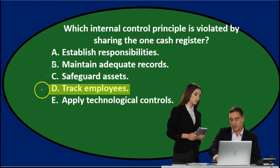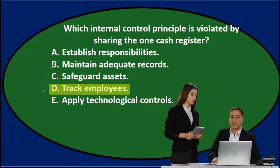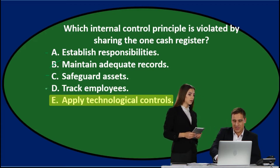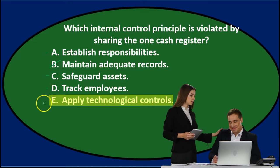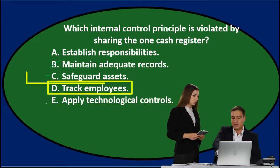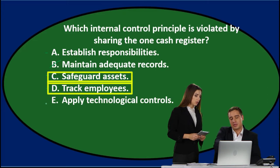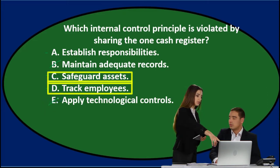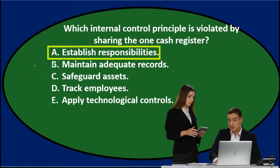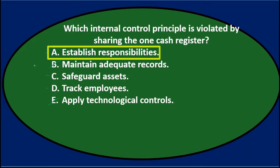D, track employees — we're not able to track employees as well, so I'll keep that. E, apply technological controls — we are using the register as part of our controls, so it's not technological controls. I'll narrow it down to A, establishing responsibility; C, safeguard assets; and D, track employees.